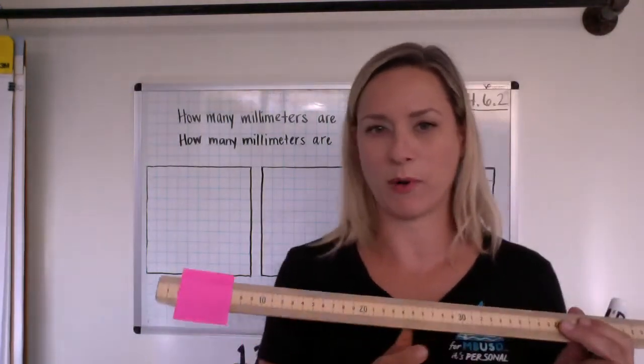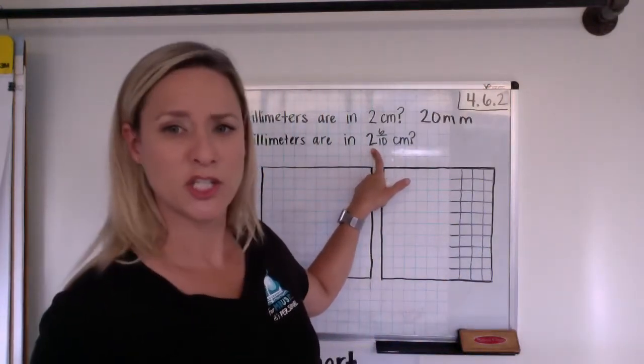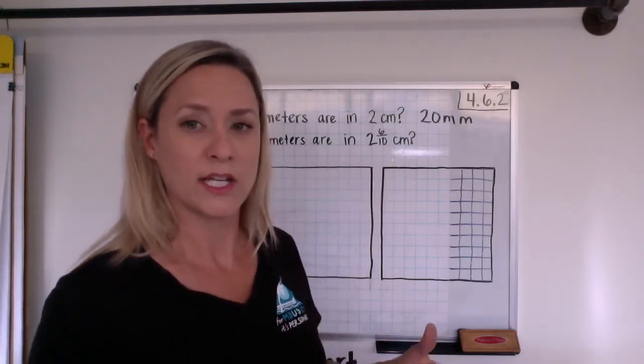I'm going to write mm for millimeters and cm for centimeters. All right, now, here's the tricky part. We can also ask about 2 and 6 tenths. So, now we're not at a whole number anymore. So, now I'm going to think about 2. I have my 2 right here. But I need to move it just a smidge more because I need 6 tenths.